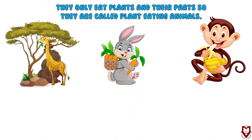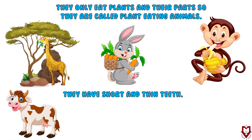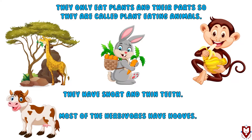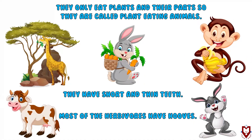They only eat plants and their parts, so they are called plant-eating animals. They have short and thin teeth. Most of the herbivores have hooves. Herbivores do not have strong claws.